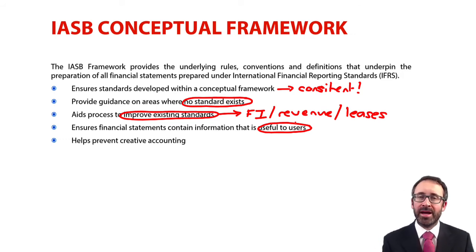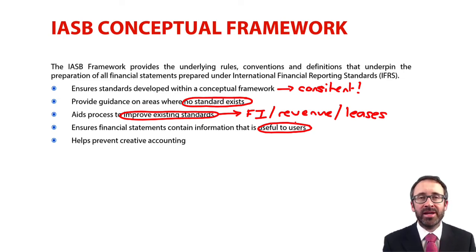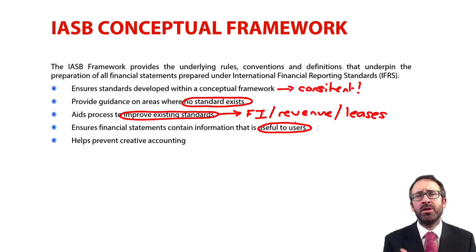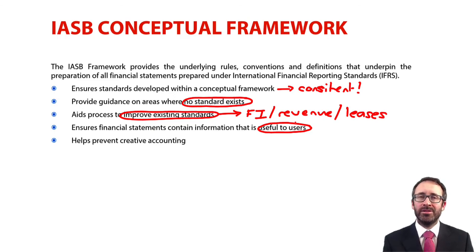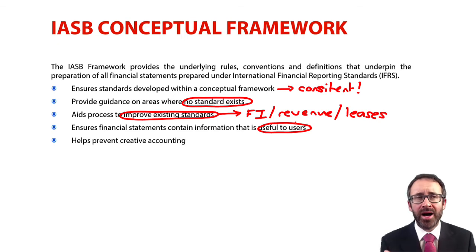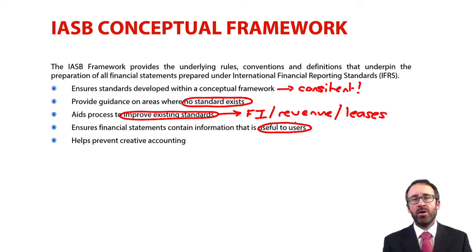Remember, the users of the accounts are looking to make decisions. The framework also rules out creative accounting, because if there is any area of uncertainty you should go back to the framework when using judgment or estimates, to ensure that the accounting you are applying is not unethical. With this Rosetta Stone — this fundamental guidance — we can ensure that there is no creative accounting.